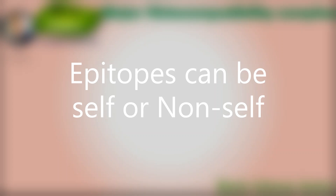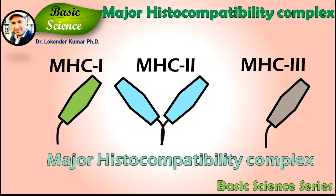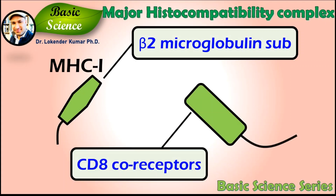The MHC gene family is divided into three subgroups: MHC class 1, MHC class 2, and MHC class 3. MHC class 1 molecules have a beta-2 microglobulin subunit, which can only be recognized by CD8 co-receptors; therefore, they bind with cells that express the CD8 co-receptor.